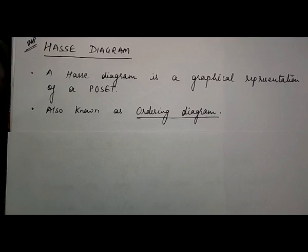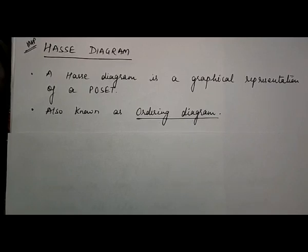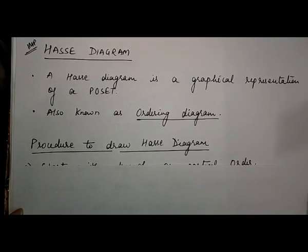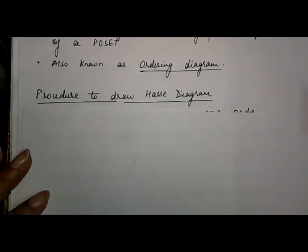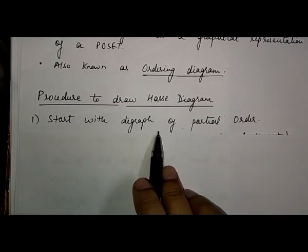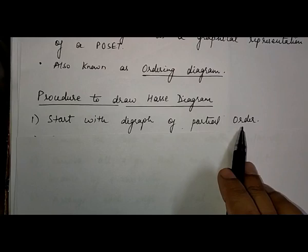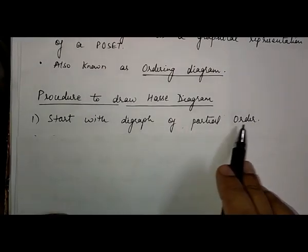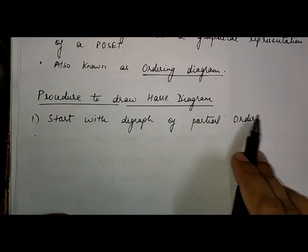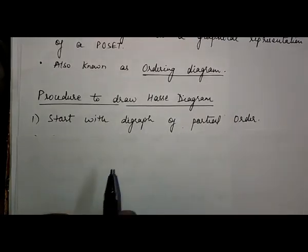There are certain steps to follow to draw a Hesse diagram for a particular POSET. The first step is that we have to start with a digraph of a POSET — meaning, given a partial order set, we first have to draw the digraph. Digraph means a directed graph.